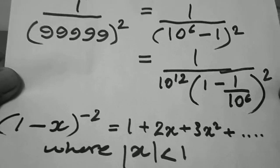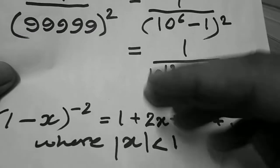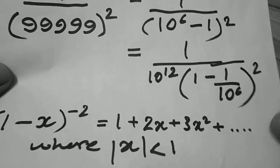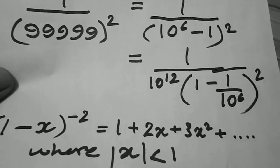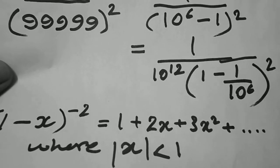This reduces to something like this: 1 minus x raised to power minus 2. If you know about the binomial theorem, then you know the expansion of this. It's something like this. Then we insert the value of x into this and finally get our expansion.